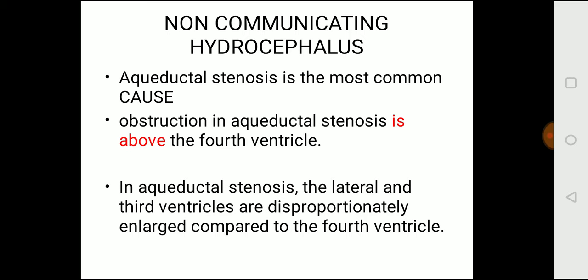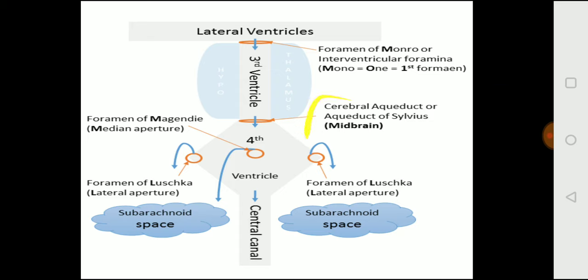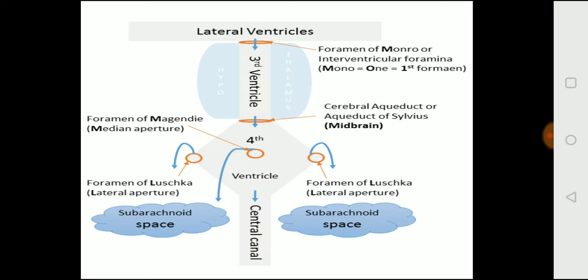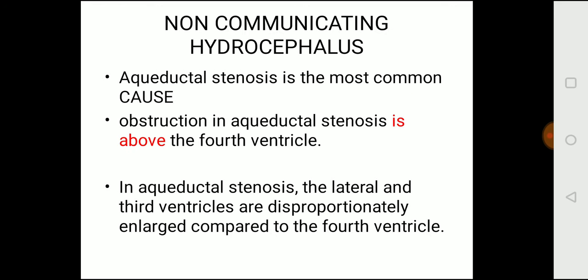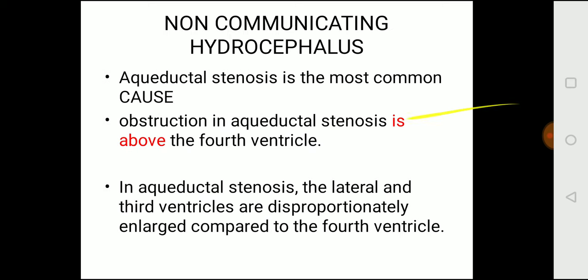Non-communicating hydrocephalus: the most common cause is aqueductal stenosis. If there is narrowing in the aqueduct, CSF flowing from the lateral to third ventricles cannot go into the fourth ventricle. This is called non-communicating hydrocephalus because the ventricles cannot communicate between themselves. The obstruction is above the fourth ventricle.